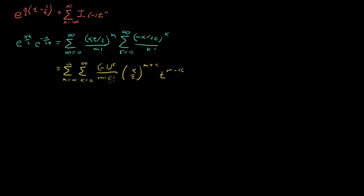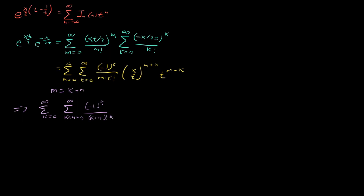The only thing left is to make these two factorials communicate with each other. The way to do that is by re-indexing the sum. I'm going to take the index m and rewrite it as k plus n, mixing m with k and a new index n. So our sum over k is unchanged, but our second sum gets changed. We now have (minus 1)^k over (k+n) factorial k factorial, times (x/2)^(2k+n), times t^n.